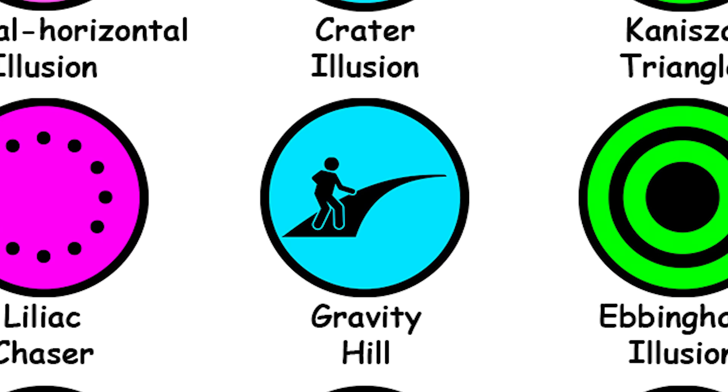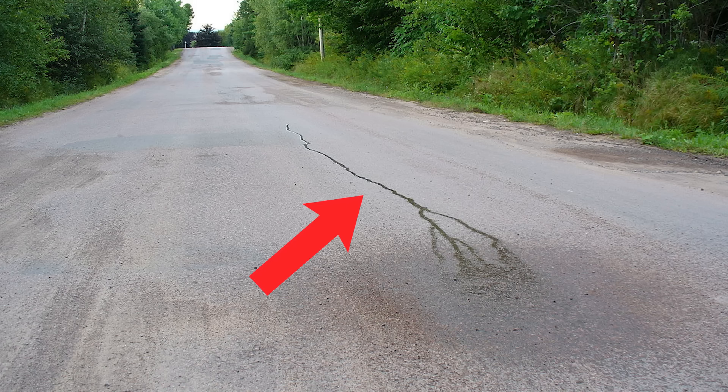Gravity Hill. It's a place where the layout of the surrounding land makes a slight downhill slope seem like an uphill slope, like in this image where the water seems to run uphill.